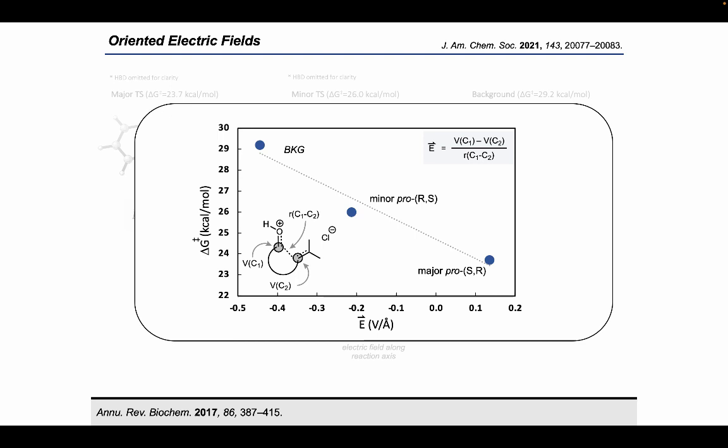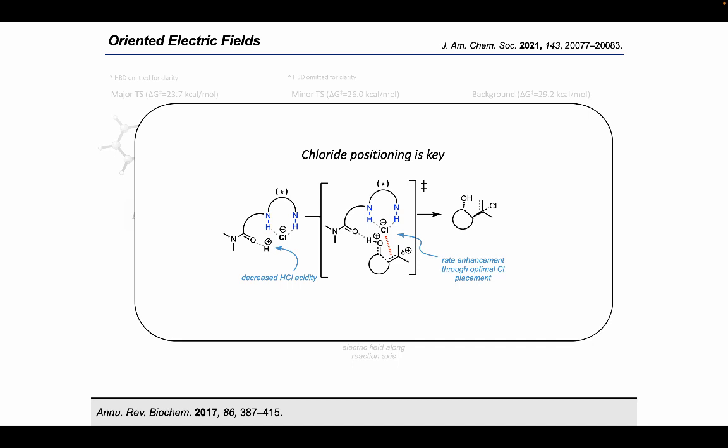To summarize, we think that despite the attenuated effective acidity of hydrogen chloride in the presence of the H-bond donor catalyst, the key to success of this reaction has to do with the productive placement of chloride by the H-bond donor catalyst. Optimal placement of chloride in an anti-periplanar geometry with respect to the alkene nucleophile induces a significant boost in the reactivity of the system by aligning the electric field created by chloride along the C-C bond forming axis.